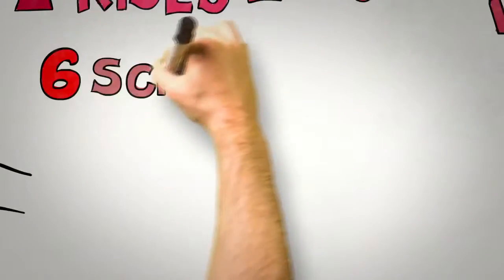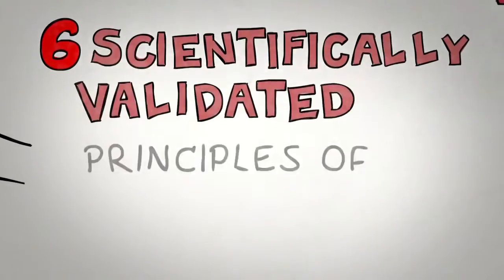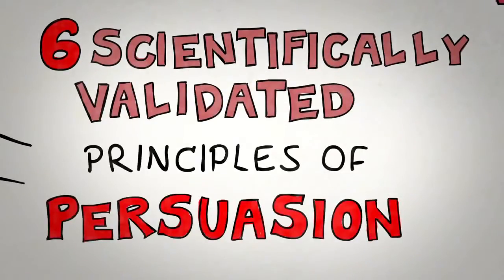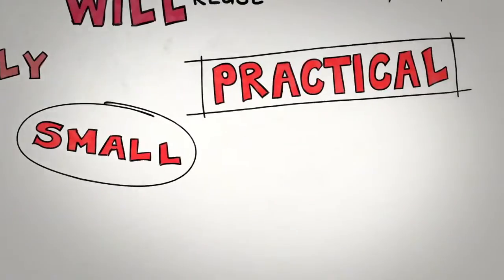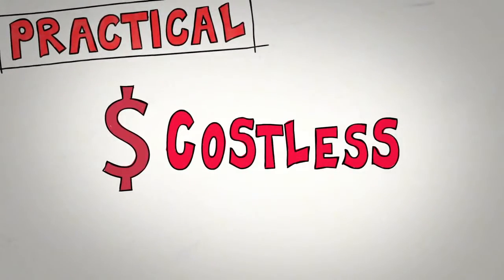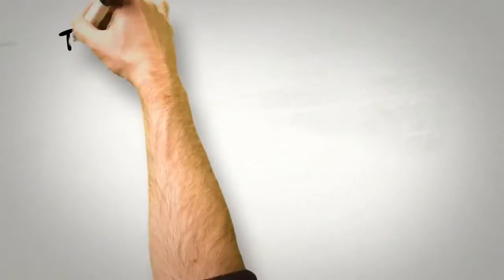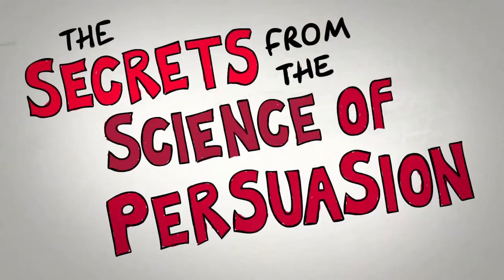So there we have it, six scientifically validated principles of persuasion that provide for small, practical, often costless changes that can lead to big differences in your ability to influence and persuade others in an entirely ethical way. They are the secrets from the science of persuasion.